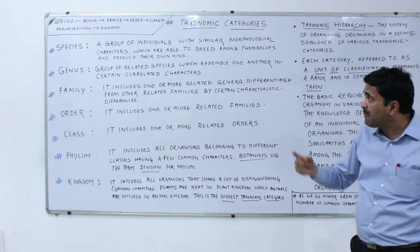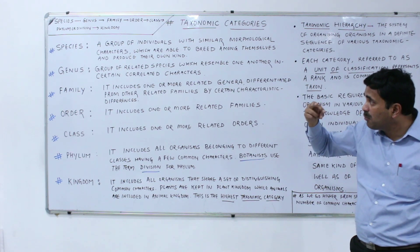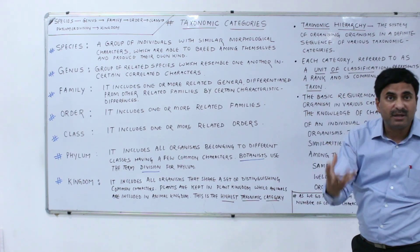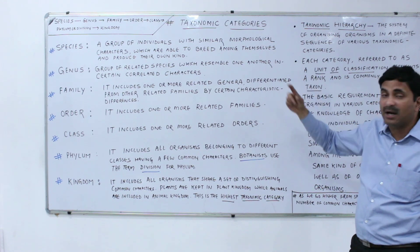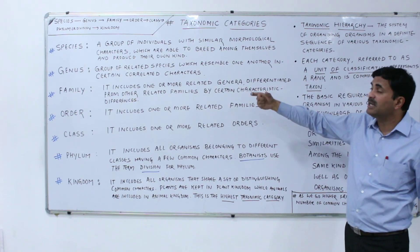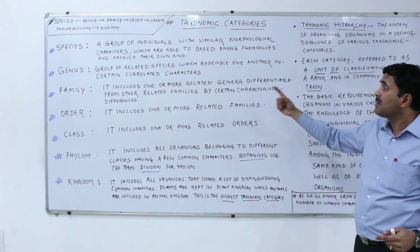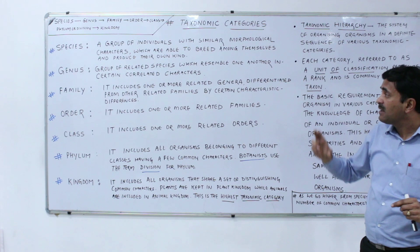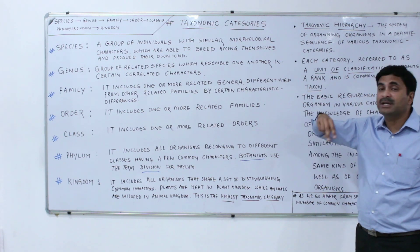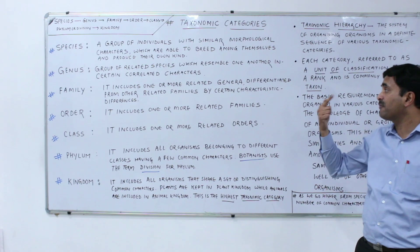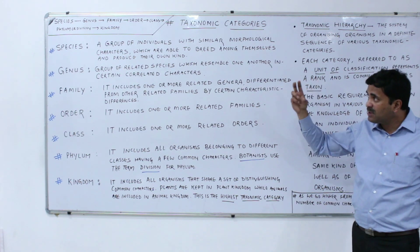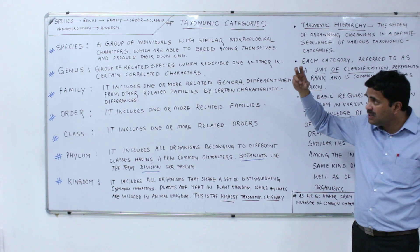The next higher taxonomic category is the family. A family includes one or more related genera. It is differentiated from other related families by certain characteristic differences. So it is now clear that species combine to form genus and many genera combine to form a family.